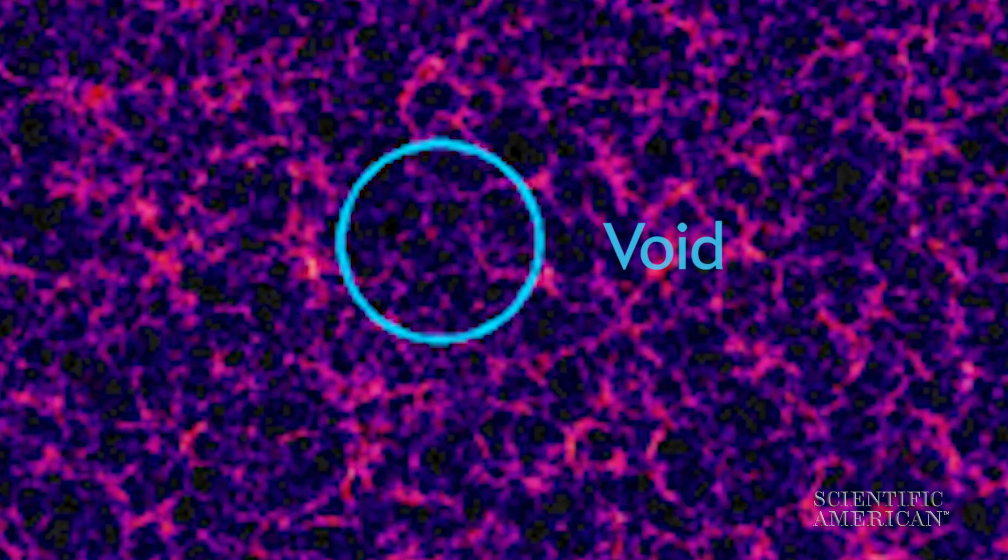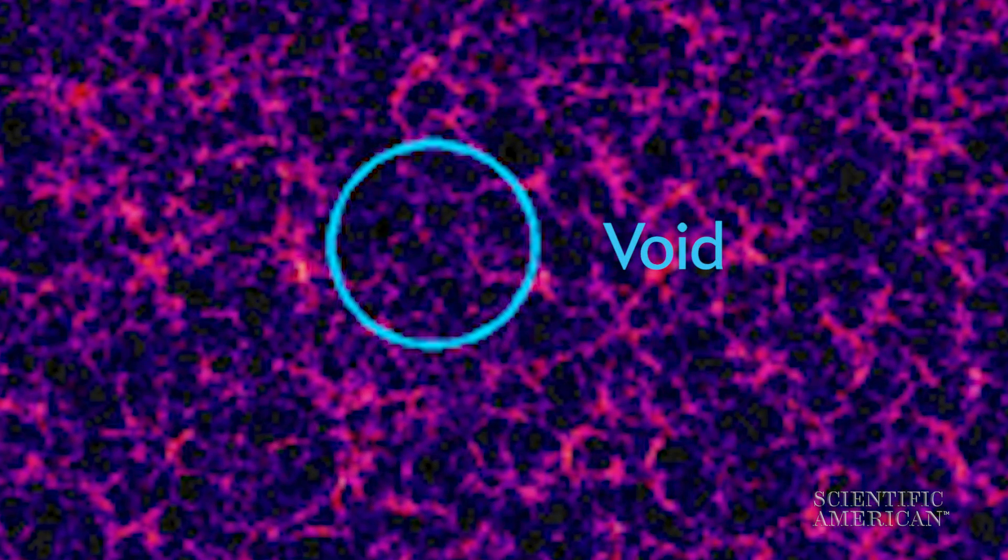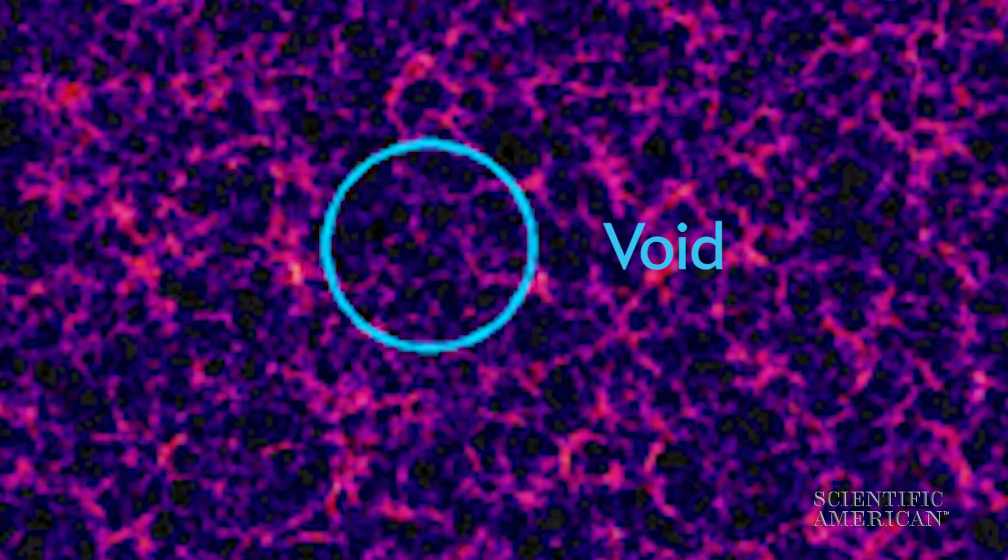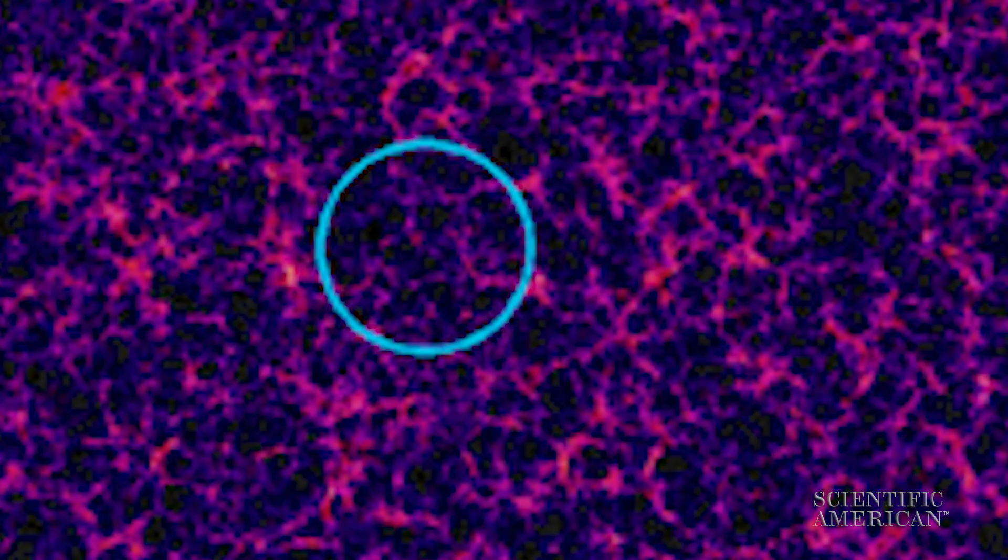The supervoid's relative lack of stuff could have drained energy from light that passed through it, explaining why the microwave background is colder there. Here's how it works.